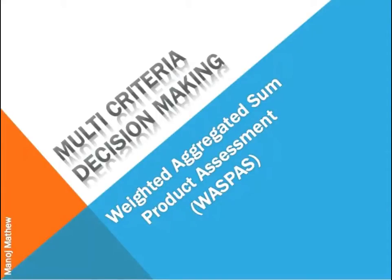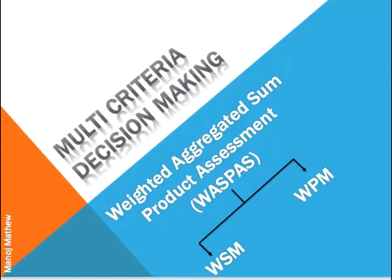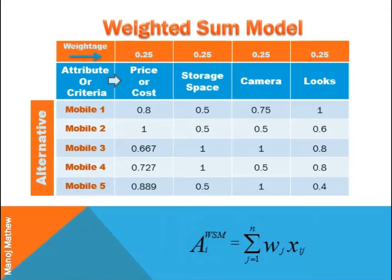Hello all, my name is Manoj Matthew. Today I will explain a multi-criteria decision-making method which is a unique combination of two well-known MCDM methods: the weighted sum model and the weighted product model. The name of this method is Weighted Aggregated Sum Product Assessment (WASPA). We are dealing with a simple situation of selecting the best mobile phone.